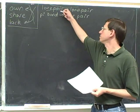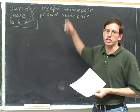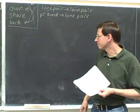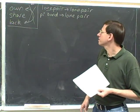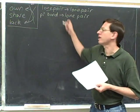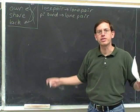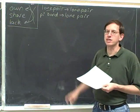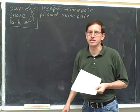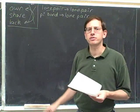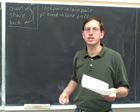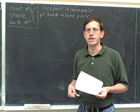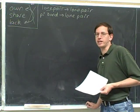We've seen that you're not allowed to take a lone pair on one atom and make it into a lone pair on another atom. What about taking a pi bond and making it into a lone pair? We know that's one of the allowed transitions. One of the main things we have to worry about is exceeding an octet — we don't want to draw resonance structures that give an atom more than eight electrons.